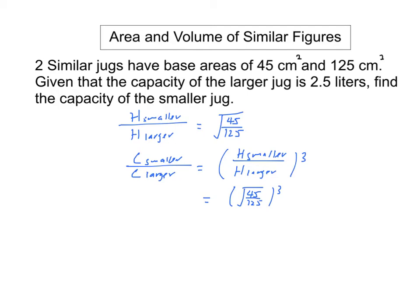And as a result, to find the capacity of the smaller jug, we will have the square root of 45 over the square root of 125, all cubed, multiplied by 2.5 liters. This gives us the answer of 0.54 liters.